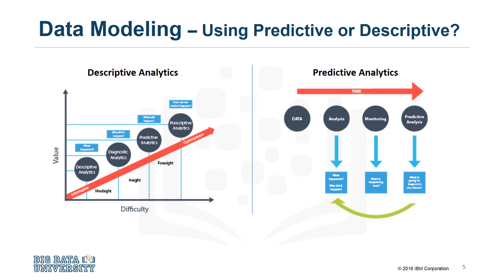Data modeling focuses on developing models that are either descriptive or predictive. An example of a descriptive model might examine things like, if a person did this, then they're likely to prefer that. A predictive model tries to yield yes or no or stop-go type outcomes. These models are based on the analytic approach that was taken, either statistically driven or machine learning driven.